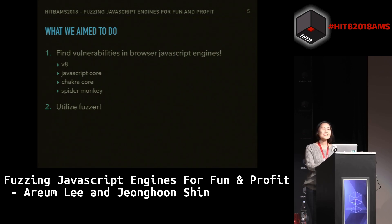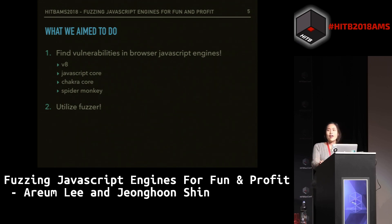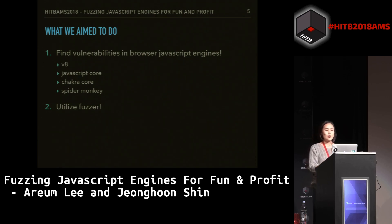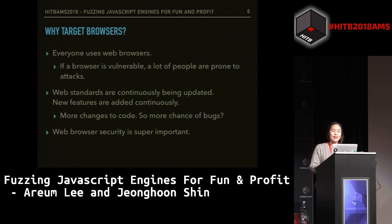To start, this is what we aimed to do. What we wanted to do was find vulnerabilities in browser JavaScript engines such as V8, JavaScriptCore, ChakraCore, and SpiderMonkey. For doing this, we wanted to utilize a fuzzer. So why fuzzer, and why browser, why JavaScript? We decided to target browsers because everyone uses browsers, so if a browser is vulnerable, a lot of people are prone to attacks.